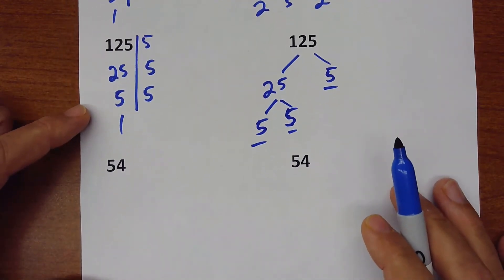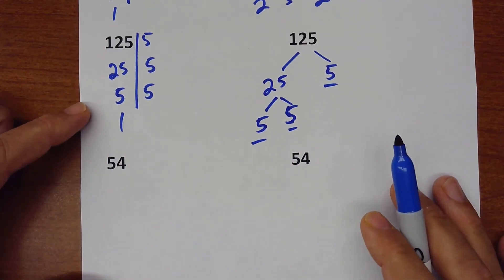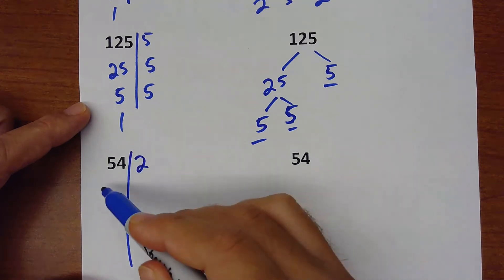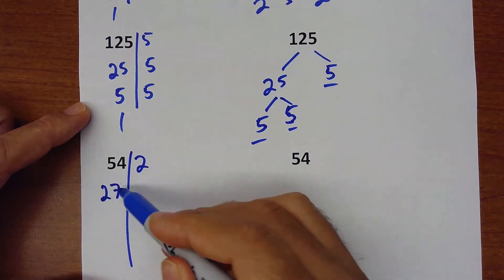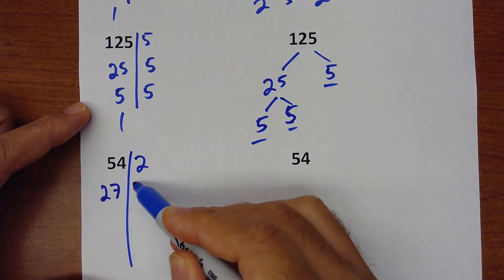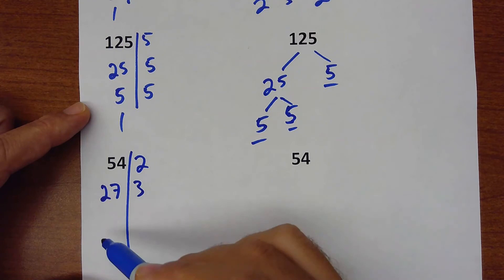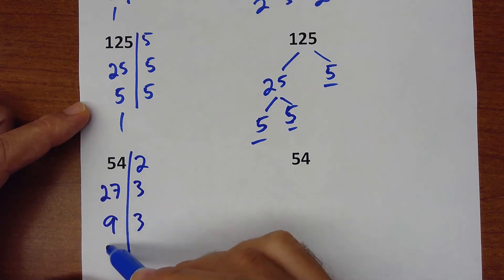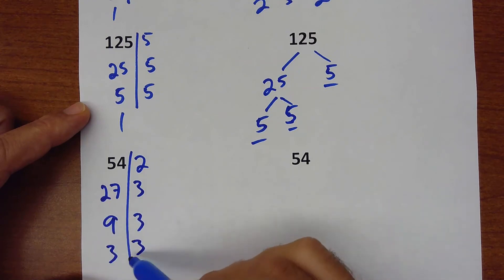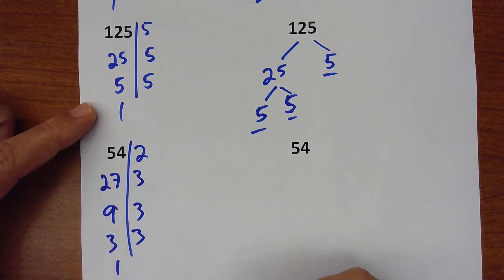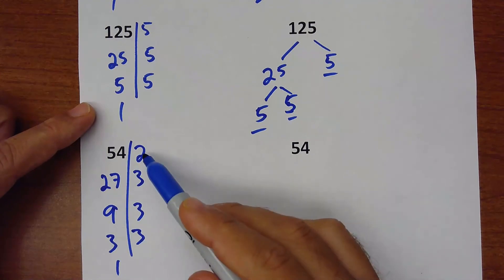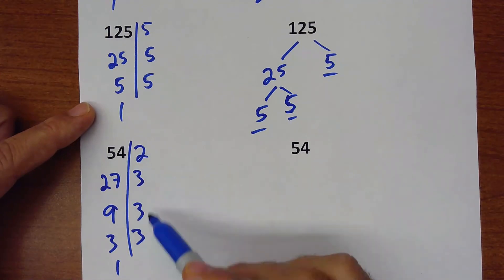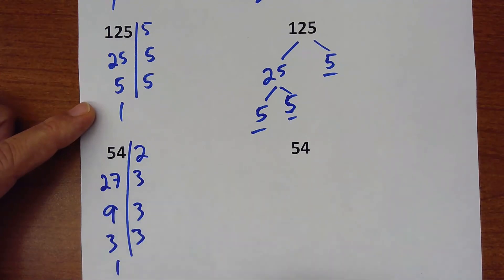Here I have another one: 54. I can do half of 54, which is 27. 27 divided by 3 is 9. Divided by 3 is 3. Divided by 3 is 1. So the prime factors of 54 are 2, 3, 3, 3.